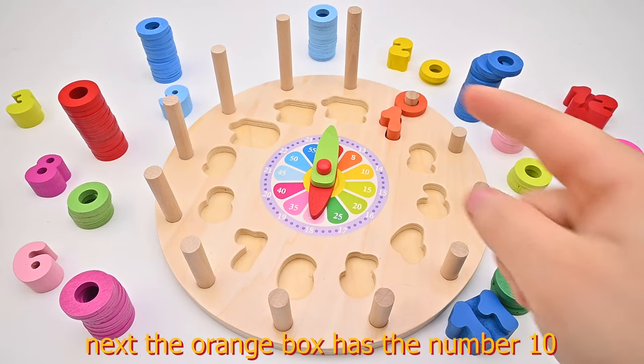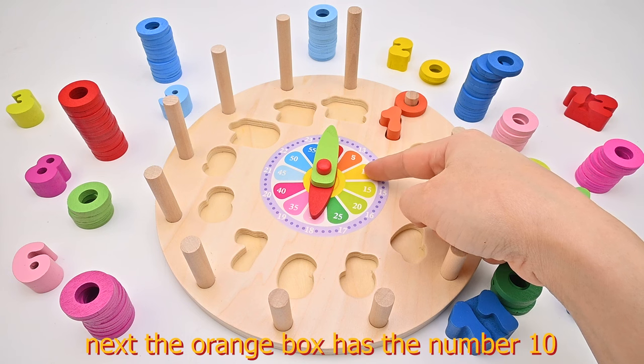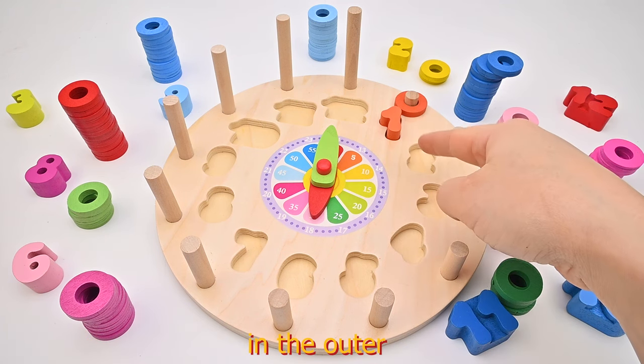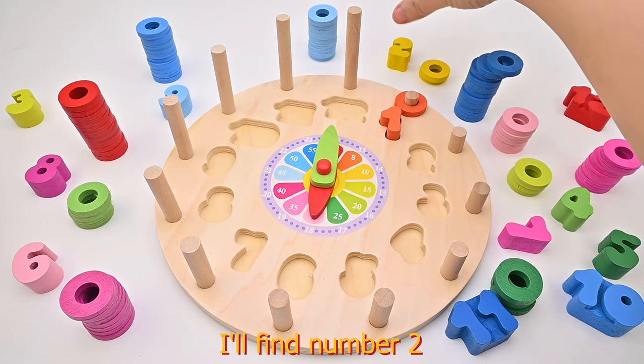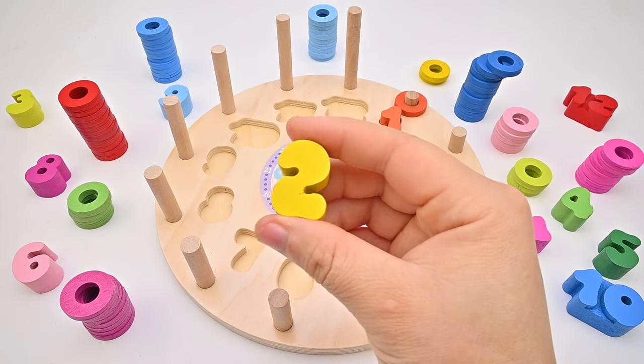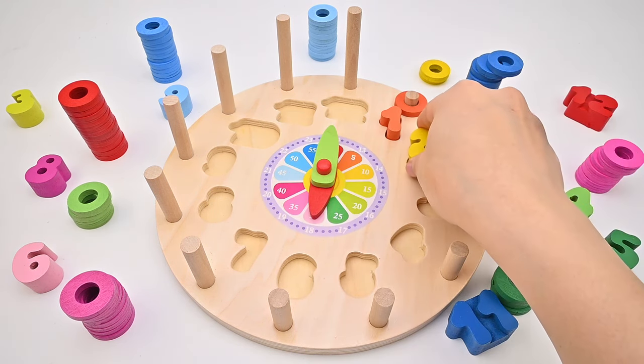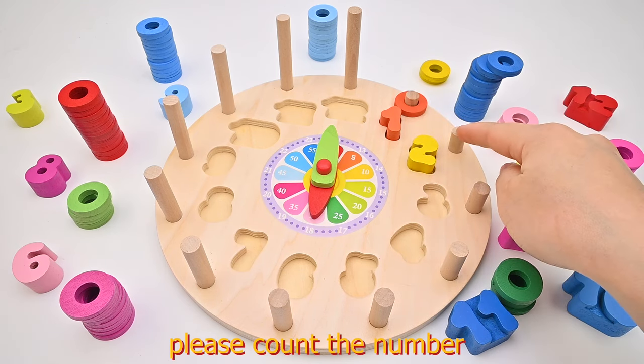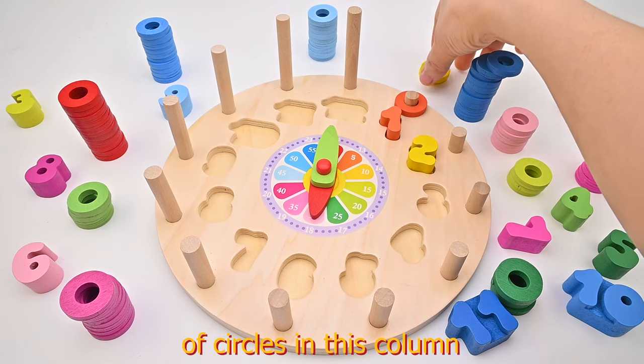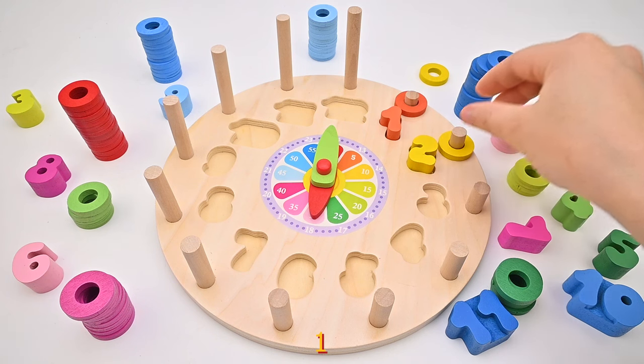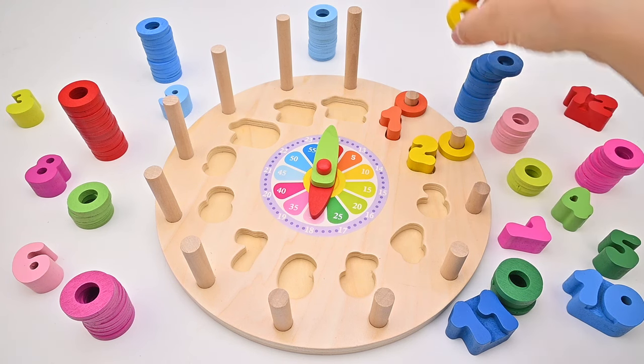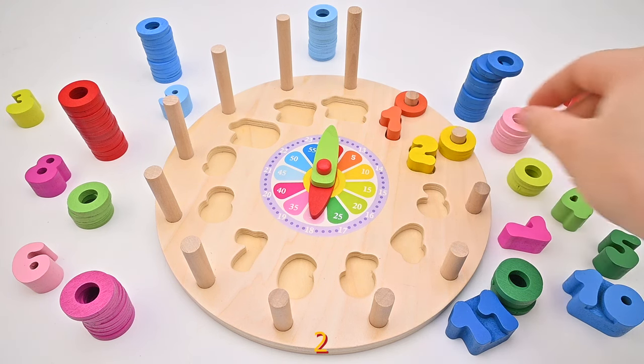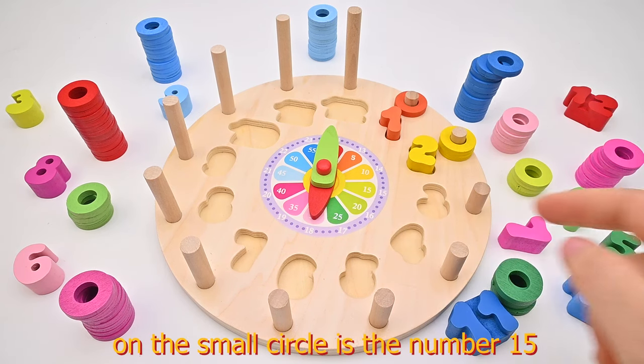1. Next, the orange box has the number 10 corresponding to the number 2 in the outer circle. I'll find number 2. Please count the number of circles in this column. 1, 2.